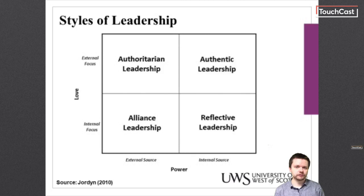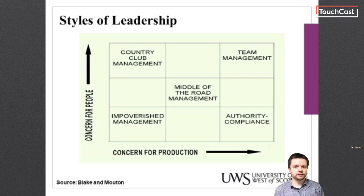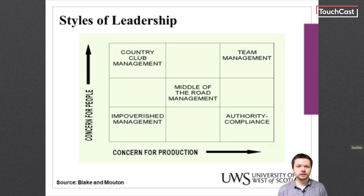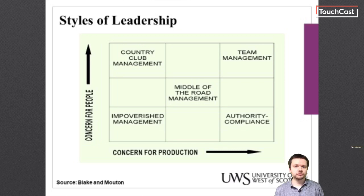Some environments lend themselves to a particular leadership style. However, the effective entrepreneurial leader is not afraid to move between these leadership styles as and when appropriate. As for styles of leadership, Blake and Mouton's 1964 managerial grid is wholly relevant. Although similar to the Ohio framework, they created a grid with concern for people on one axis and concern for production on the other. Middle of the road management had some concern for both people and production and was commonly found. Impoverished management had little concern for both people and production and was seen as indicative of failing management. Team management had great concern for both people and production and was typically associated with successful management.